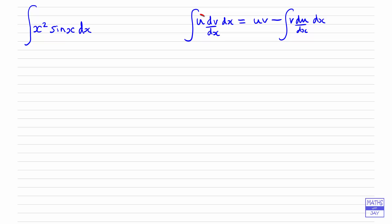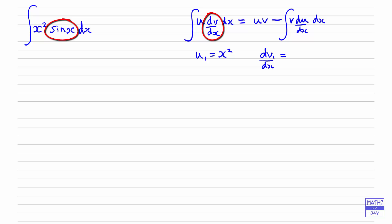Let's have a look at how this will work. Now u1 is going to be something which when we differentiate it will be simpler. So in general, and in this case it applies, we're going to let u1 be equal to the power of x. So u1 is equal to x squared, and that means our dv1/dx is going to be the other function which is sin x. For this formula we need to differentiate u1, so that gives us 2x. This is du1/dx, and integrating sin x gives us minus cos x, which is v1.